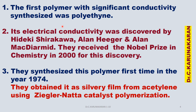Let us see the discovery of conducting polymers. The first organic polymer synthesized with significant conductivity was polyacetylene. Polyacetylene was obtained from polymerization of acetylene using the Ziegler-Natta catalyst — Ziegler-Natta also received the Nobel Prize for discovering this catalyst. The electrical conductivity of polyacetylene was later discovered by Hideki Shirakawa, Alan Heeger, and Alan MacDiarmid. They received the Nobel Prize jointly in chemistry in the year 2000 for this discovery.